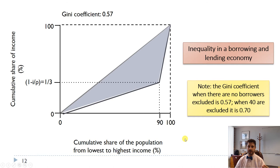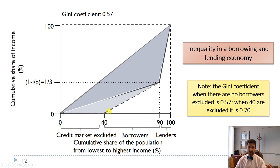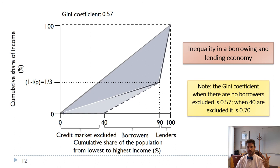The last case is when borrowers are excluded from the credit market. When nobody is excluded, everyone can borrow. But if a group is excluded and can't borrow, they receive less income while more goes to lenders, increasing inequality. This has been important in the United States and around the world, where certain groups lack access to the same credit markets, education, and employment opportunities. We'll discuss this further — including African Americans in the US, different castes in India, and ethnic minority groups in China who don't have equal access to economic opportunities.